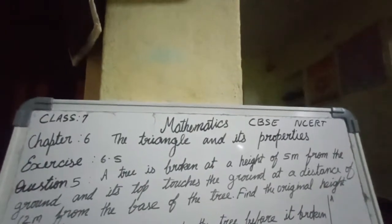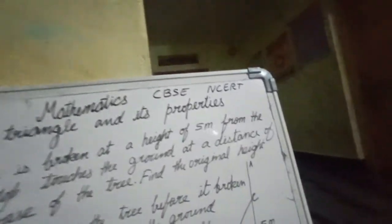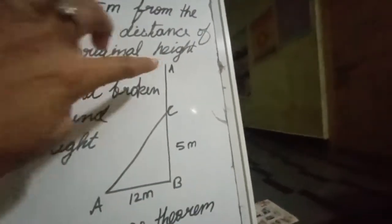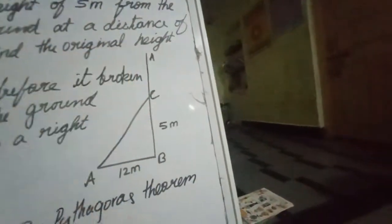Dear students, this type of question you have to put it in the form of a diagram. It becomes very easy for you. So the tree is A, the height.